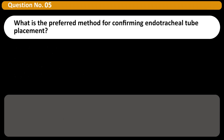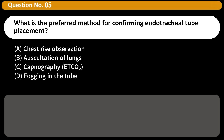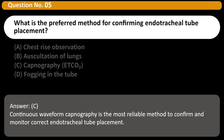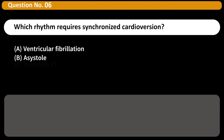What is the preferred method for confirming endotracheal tube placement? A. Chest rise observation. B. Auscultation of lungs. C. Capnography, ETCO2. D. Fogging in the tube. Answer: C. Continuous waveform capnography is the most reliable method to confirm and monitor correct endotracheal tube placement.